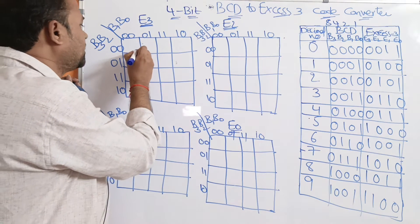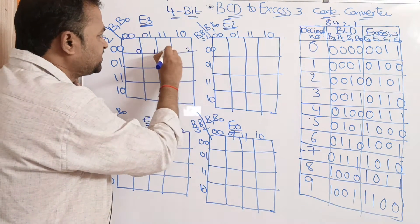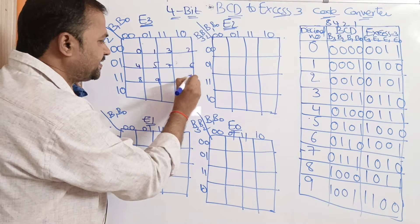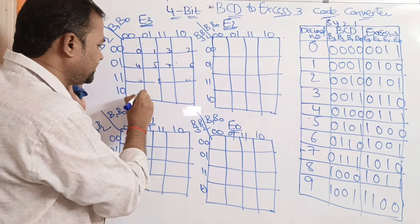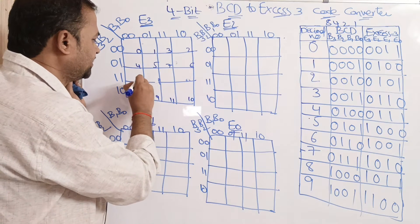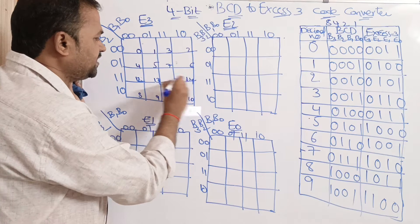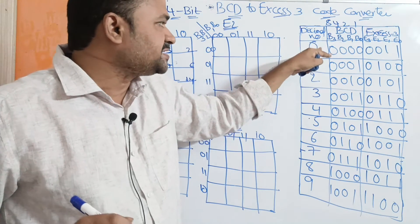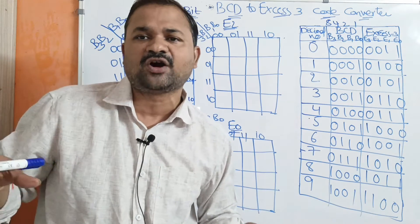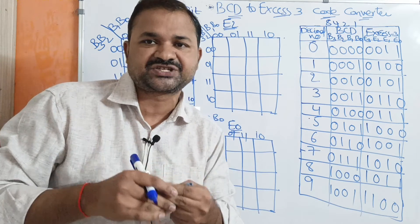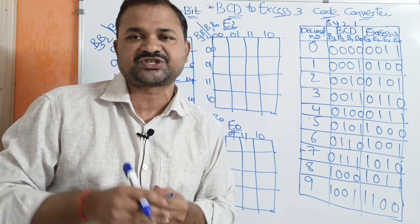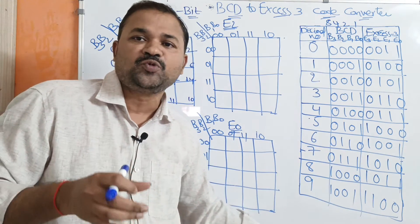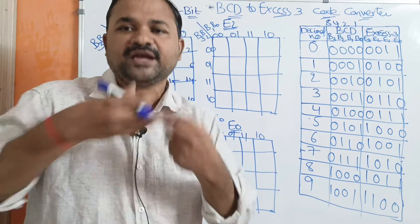The K-map cells represent minterms 0 through 15. We can represent only minterms 0 to 9 as valid BCD inputs. The remaining minterms from 10 to 15 are don't care conditions, because we don't know what the output is for those combinations — it may be either 0 or 1. So we write don't care in all those 6 cells.